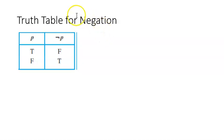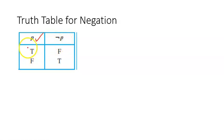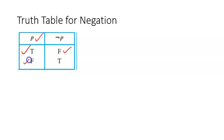One thing fundamental to logic is the truth table. The truth table of negation of P looks like this: there are two possible values P can take — true or false. If P is true, then negation of P is false. If P is false, then negation of P is true.